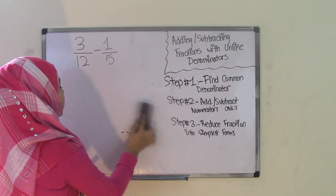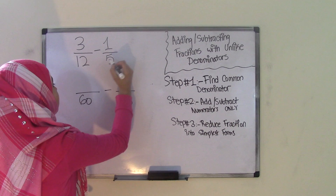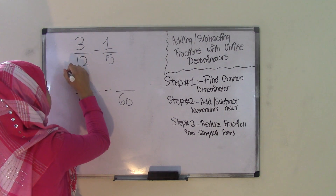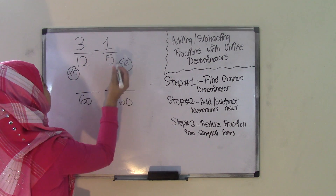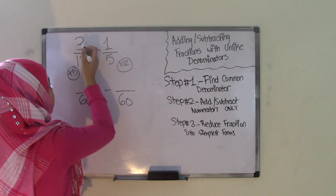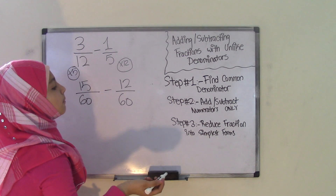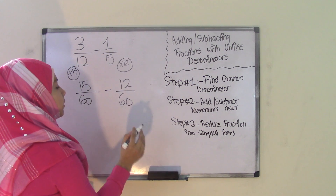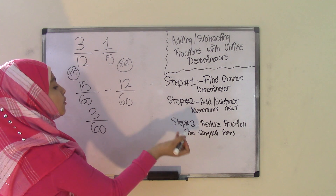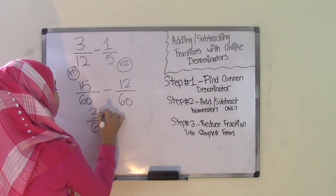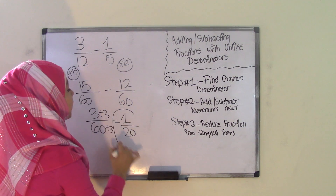We rewrite our fractions with a denominator of 60. 60 divided by 12 is 5, so 12 times 5 gives us 60. And 60 divided by 5 is 12, so 5 times 12 is 60 as well. Now apply the same to the numerators: 3 times 5 is 15, and 1 times 12 is 12. Step 2 — subtract the numerators only, keeping the denominator: 15 minus 12 is 3, giving us 3 over 60. Step 3 — reduce: 3 divided by 3 is 1, and 60 divided by 3 is 20. We can't reduce further, so our final answer is 1 over 20.